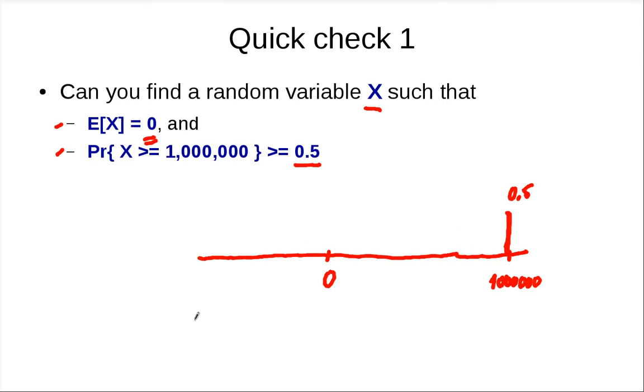What does it take to make this random variable X have expected value 0? You can put another mass at minus 1 million with probability 0.5. If you have this, then E[X] = 0, but X can be extremely large—a million with probability half the time.